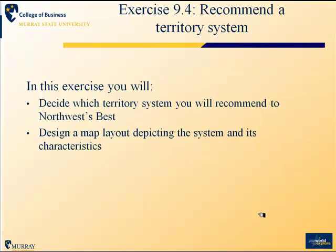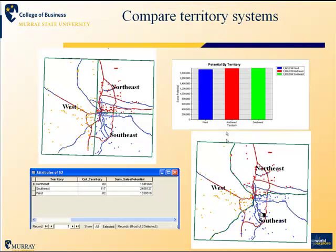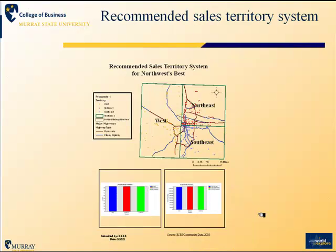In task four of the chapter, you will recommend one of the two territory systems to the company based on the objectives they've laid out and the performance of the two systems relative to those objectives. You'll have the two territory design systems along with graphs and tables indicating their characteristics, and you'll produce a map illustrating which system you've recommended along with the data that supports your recommendation.